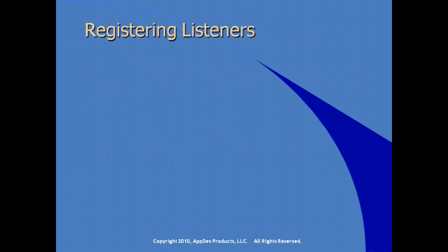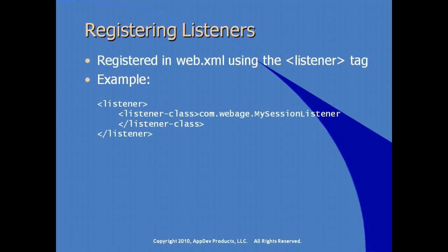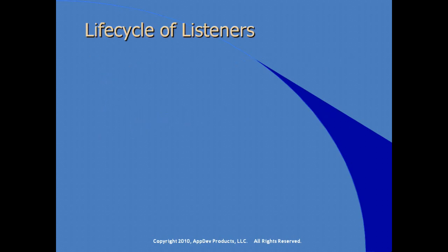To configure our listeners and notify the system that we're interested in handling certain events, we modify the web.xml deployment descriptor and use the listener tag. A very simple example: we add a listener element containing the listener-class element with the fully qualified Java class name. That's all we have to do — the implementation of the methods in our class are what get called by the system.